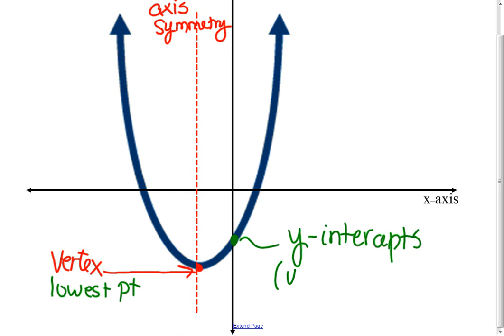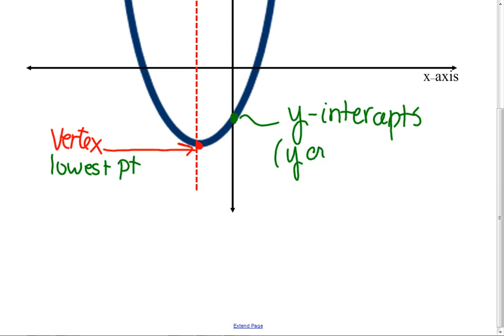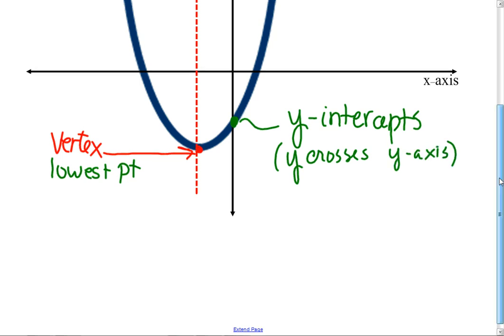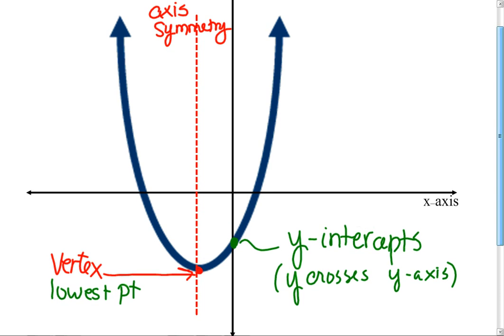Where the y crosses the y-axis is called a y-intercept. What would you call these points where the curve crosses the x-axis? There's two of them. There's the x-intercepts. That's an x-intercept, and this is an x-intercept. Well, these are the parts of the parabola you need to know.